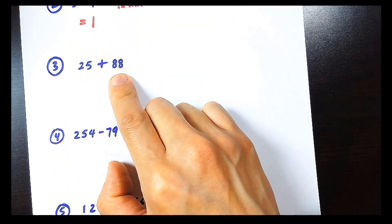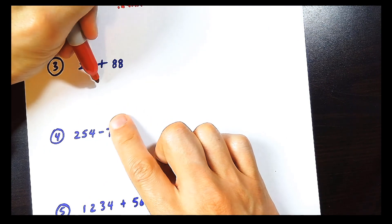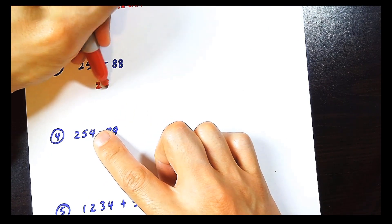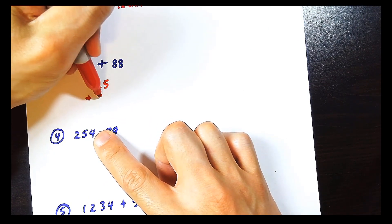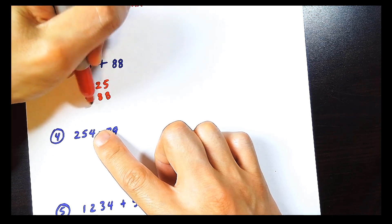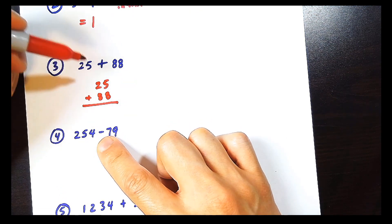What is 25 plus 88? Here I recommend that you align things up nicely. 25 plus 88. You start adding up and down.